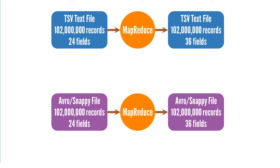I ran a couple of tests to provide an example of the advantages you get when you use data compression with Hadoop. The only difference between these two sample runs was in their input and output formats. In the first case, a MapReduce program consumed a tab-separated text file and produced a new tab-separated text file containing the original data plus 12 new calculated fields. In the second case, a similar MapReduce program consumed an Avro file compressed using Snappy and produced similar output in Avro-Snappy format instead of TSV. I ran the test jobs when no one else was using the cluster during a holiday weekend, so the difference in performance was based purely on file formats. Compared to large Hadoop files, my test files were rather small, but if you extrapolate the results, the savings would be quite significant with larger files.